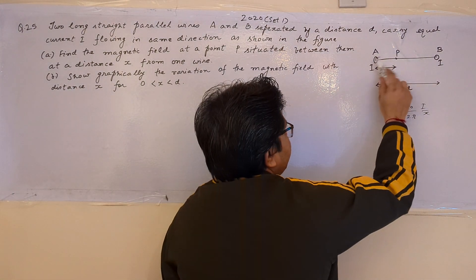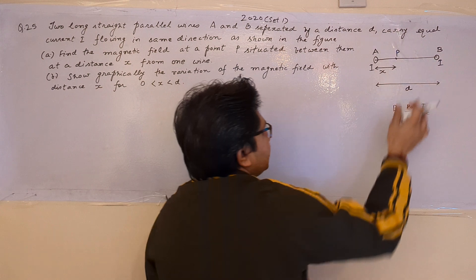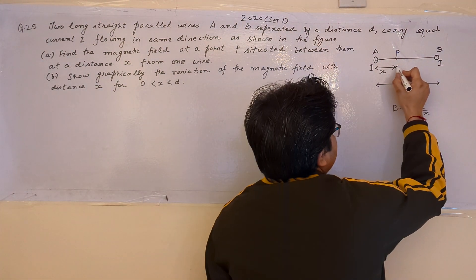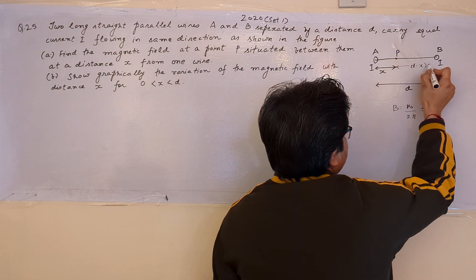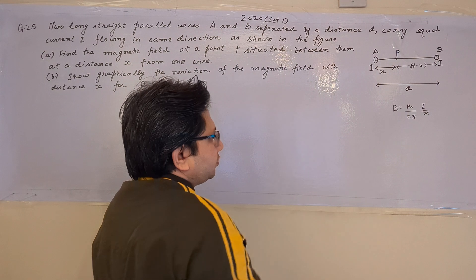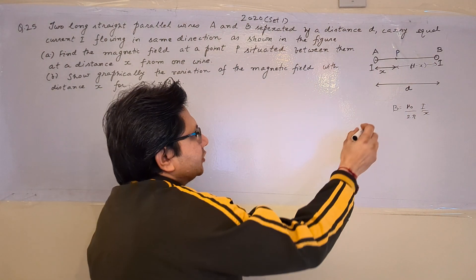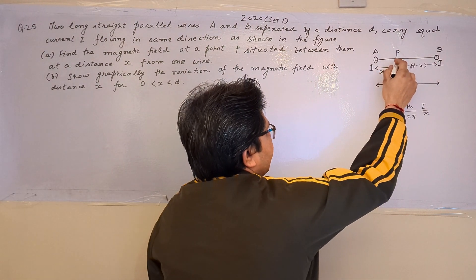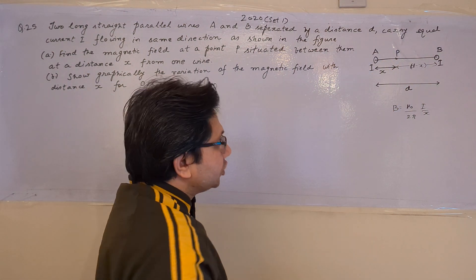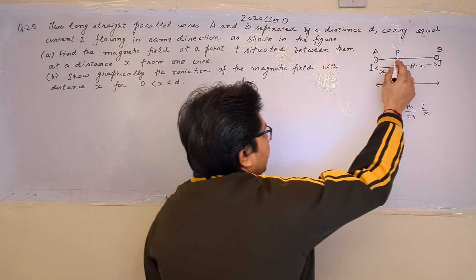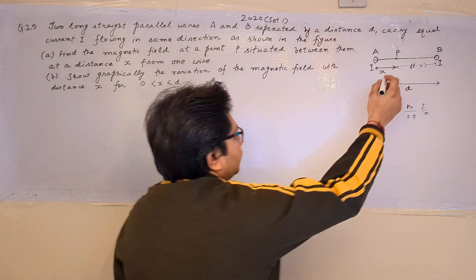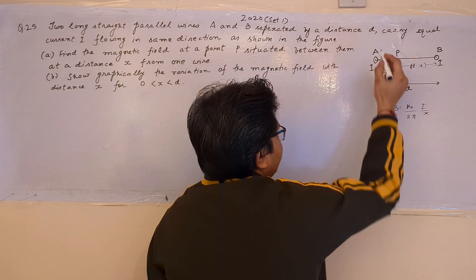The distance of point A from point P is x, and the distance between the two wires is d, so the distance from P to B is d minus x. Using this formula, we first consider the direction of the magnetic field due to each wire. Since both wires carry current in the same direction, the magnetic fields at point P are in opposite directions.